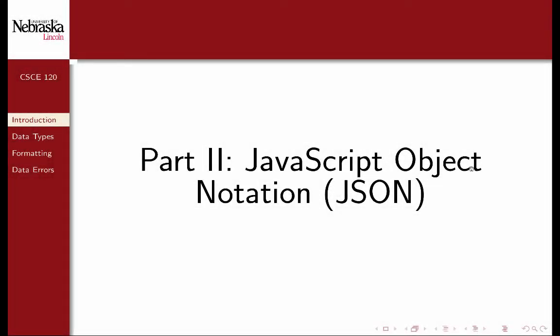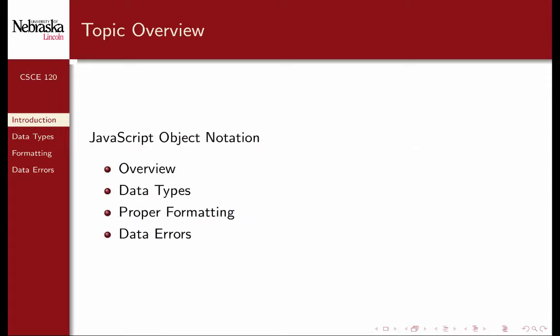Welcome back to part two — JavaScript Object Notation, or simply just JSON. In this part, we'll give an overview of JavaScript Object Notation, including the formatting and syntax used in the language. We'll look at various data types supported by JSON, as well as proper formatting and what results when you don't have proper formatting or syntax errors.